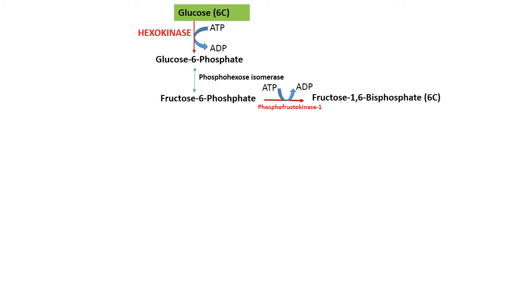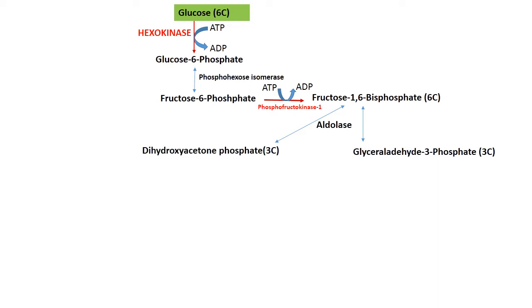Fructose-1,6-bisphosphate is cleaved by aldolase into two three-carbon molecules: glyceraldehyde-3-phosphate and dihydroxyacetone phosphate. Dihydroxyacetone phosphate is a ketose, whereas glyceraldehyde-3-phosphate is an aldose. Dihydroxyacetone phosphate can be converted to glyceraldehyde-3-phosphate in a reversible step.